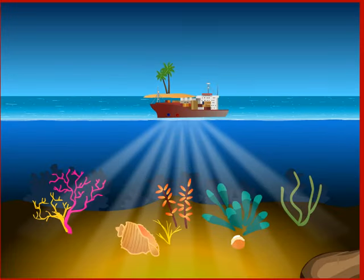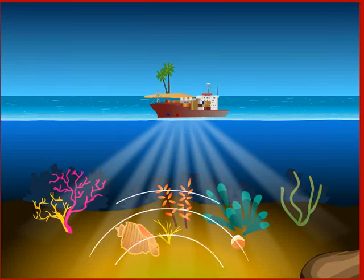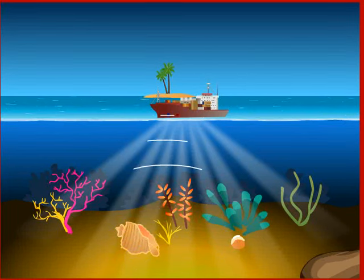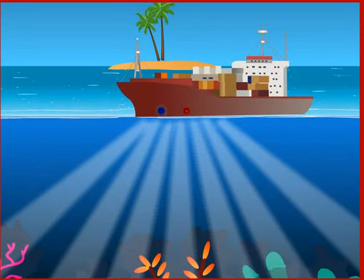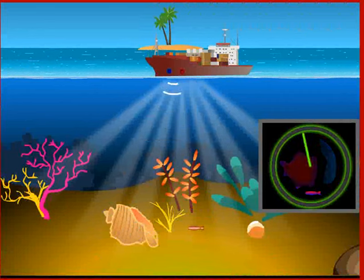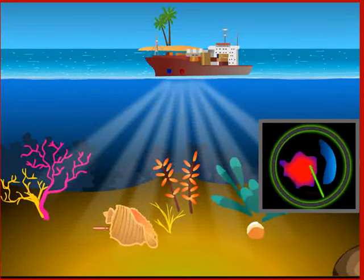The transmitter produces and transmits ultrasonic waves that travel through water. They get reflected from any object or surface that comes in their path. The reflected waves get sensed by the detector, which converts them into electrical signals that are then interpreted.